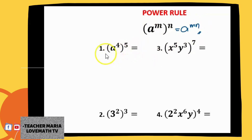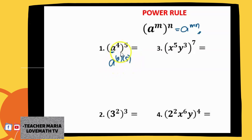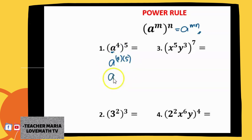Now, how about if we have a raised to 4, raised to 5? We leave the base a and then multiply 4 times 5. Since they are both numbers we can multiply — 4 times 5 is 20. So the answer is a raised to 20.